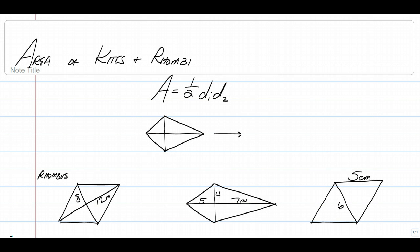Alright y'all, let's do this. Longo here to talk to you about how to find the area of kites and rhombi. The formula to find the area of a kite and a rhombus is half diagonal one times diagonal two.